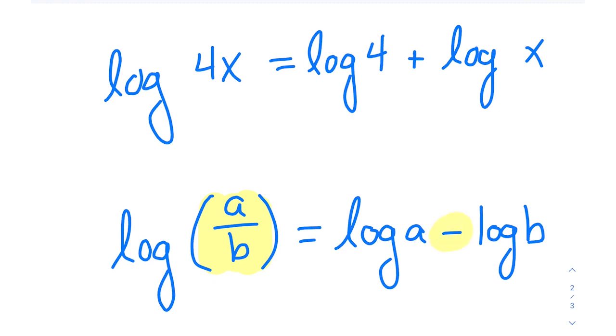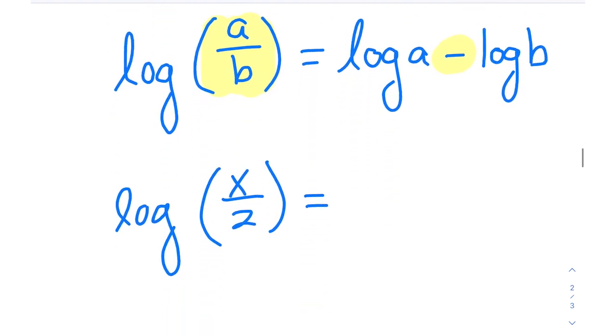Here to see it without its generic form of a and b: if you had something like log of x over 2, in its expanded form you'd have log of x minus log of 2.